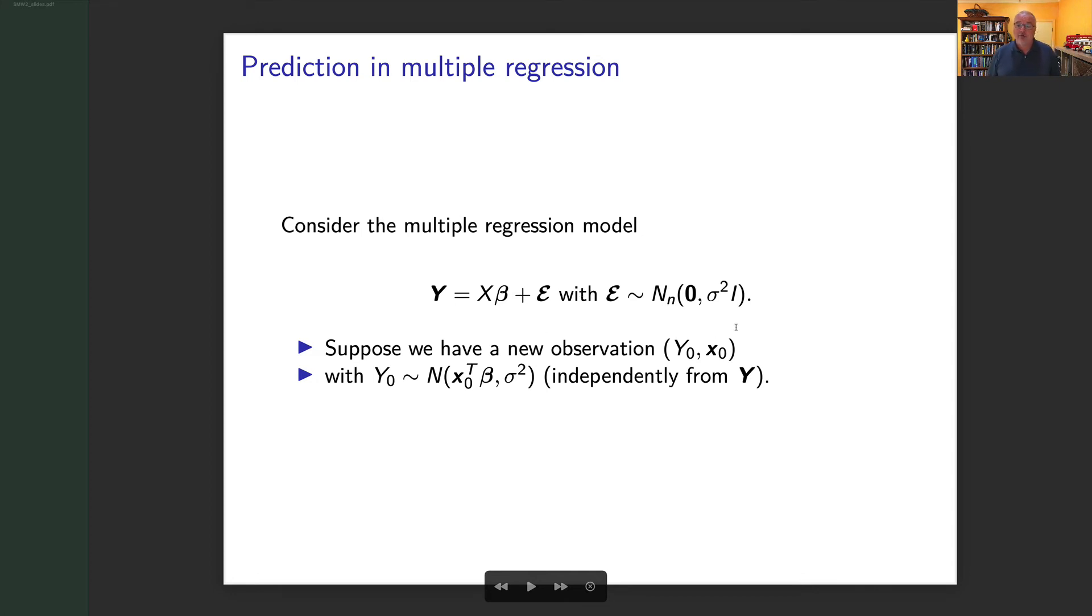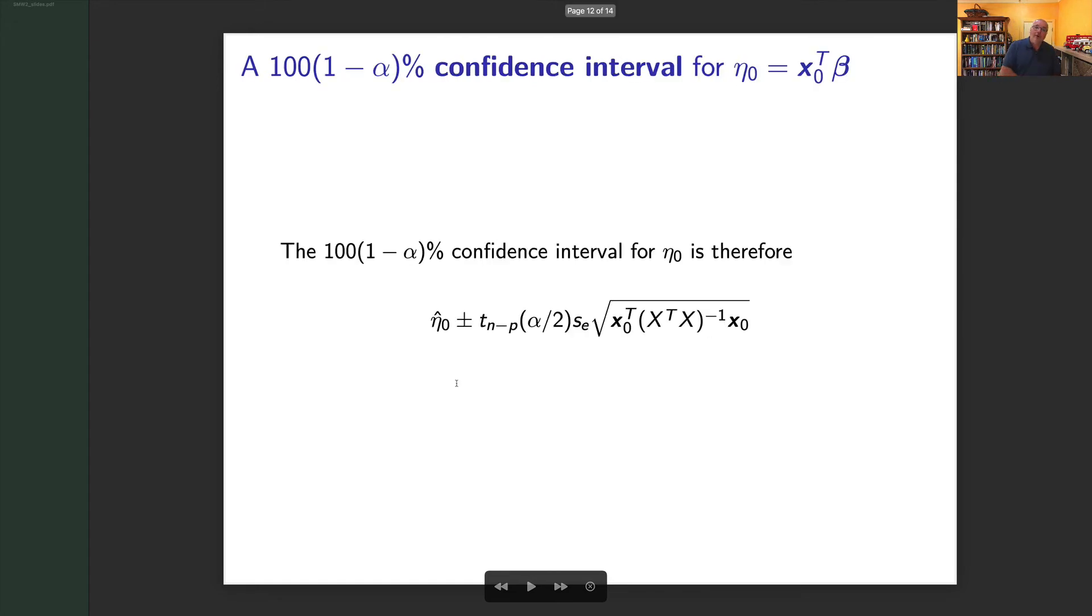I've got a new observation with these predictors and I'd really like to know Y₀. And we're going to assume that basically the data we had before shouldn't affect this new observation. The first thing I could do is I could say what's the average response variable, so the expected value of that response variable for every single subject with those predictor values.